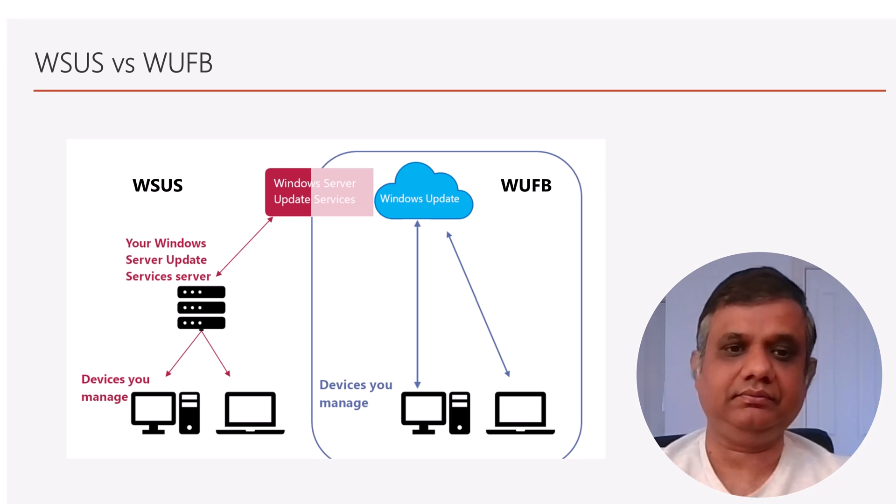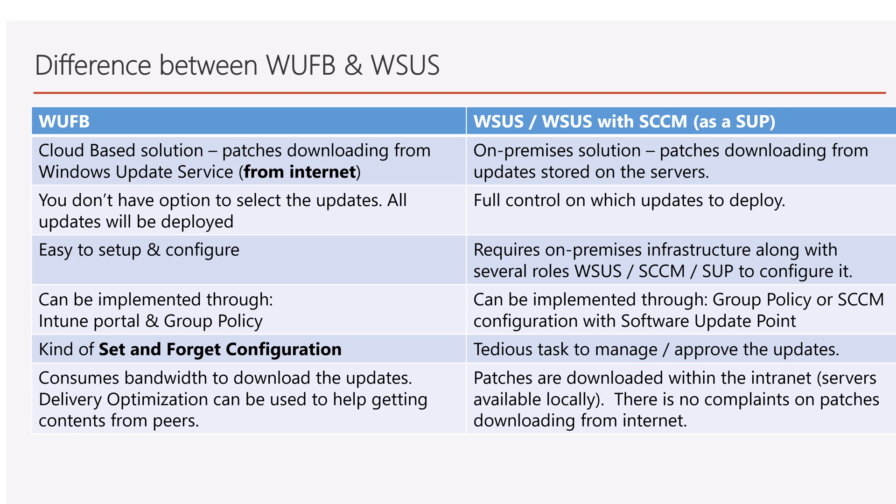Now for the key differences: Windows Update for Business is a cloud-based solution where patches are downloaded from Windows Update using the internet, while WSUS is completely on-premises and patches are downloaded once to the server. With Windows Update for Business you have no option to select individual updates — it's a set-and-forget configuration where all updates are deployed. With WSUS, you have granular control over which updates to approve, download, and deploy.